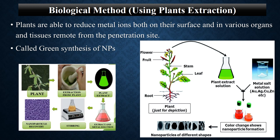Here is the biological method. In this method, different plant extracts are used as reducing agents. A metal salt solution — which can be of gold, silver, copper, zinc, etc. — when treated with a plant extract is converted into nanoparticles. This method is very important and has high value in research. It is called green synthesis as no harmful or dangerous chemicals are used, making it very environmentally friendly.